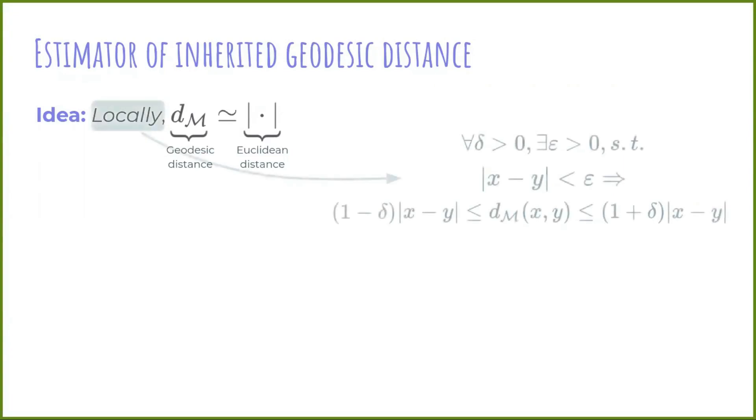Well, for compact manifolds, given some threshold delta in the error, there exists some global value epsilon such that, if two points in the manifold are at Euclidean distance at most epsilon, then the error of approximating geodesic distance by Euclidean distance can be bounded in terms of delta.